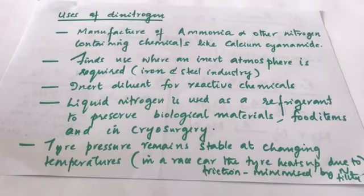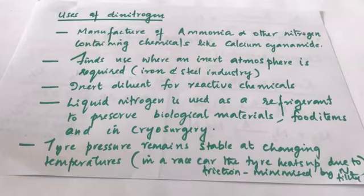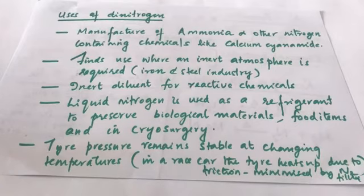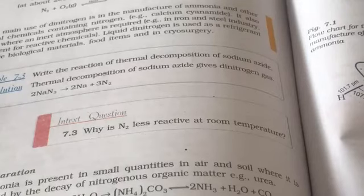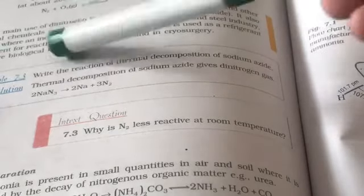Air contains about 78% nitrogen along with water vapor. Water vapor can cause rusting of tire rims. In race cars, tires get heated due to friction, and temperature changes can cause tire explosions. Using nitrogen to fill tires helps prevent these problems and reduces rusting of tire rims.